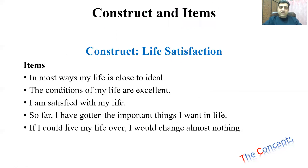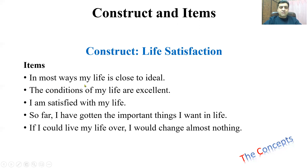Let's talk about another example: life satisfaction. How can we know that a person is satisfied with his or her life? One simple way is to ask if they're satisfied or not, but constructs are not that simple — you need multiple ways of understanding them. So let's look at the items of life satisfaction. The first item can be: 'In most ways, my life is close to ideal.' The second: 'The conditions of my life are excellent.' Another item: 'I am satisfied with my life' — although it's a direct item, it is also measuring life satisfaction.